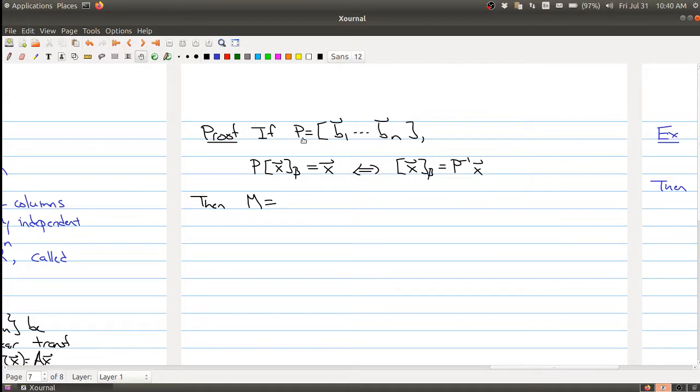So our matrix P is, if our matrix P is B1 through BN, so these are all eigenvectors and it's invertible, P times the B coordinate of X will always give you X.